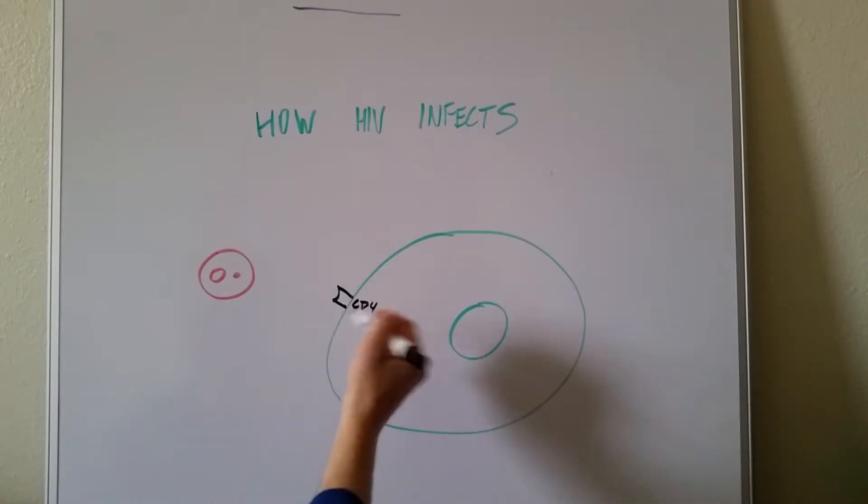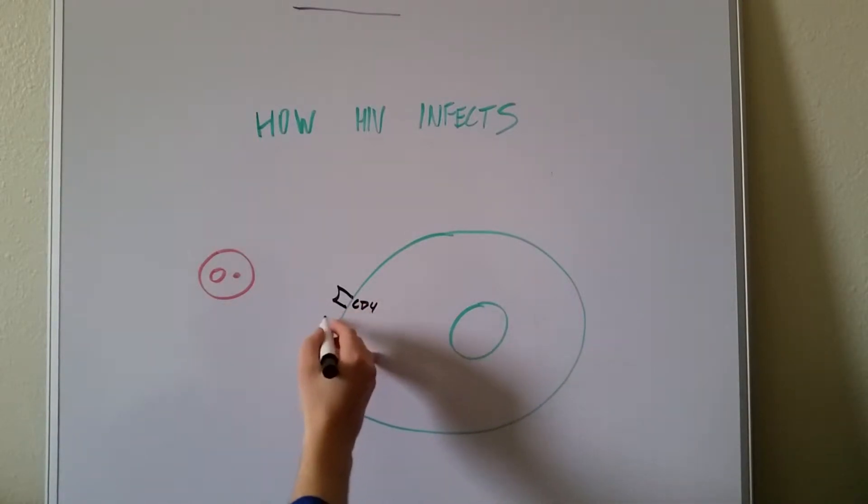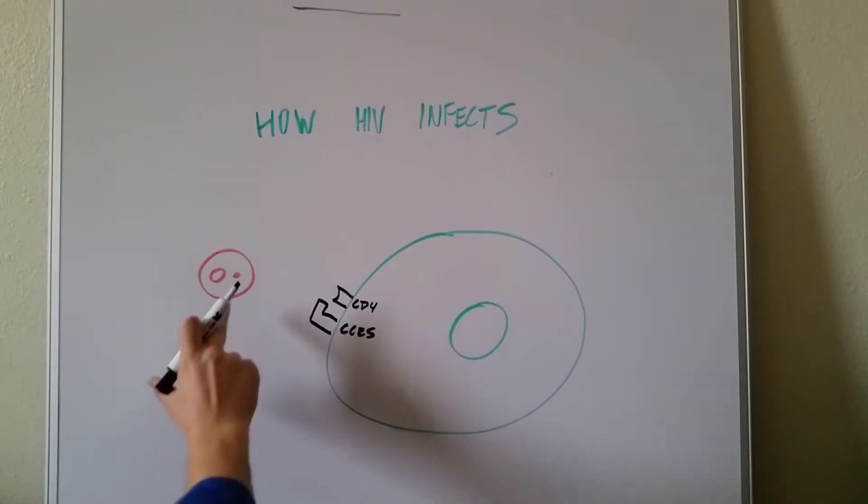Some people have this variant. And I should say a lot of people have this variant, a coreceptor. I'm just going to draw it like this. And that's a CCR5 coreceptor. Kind of important, not super important.